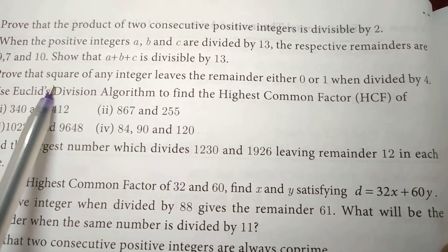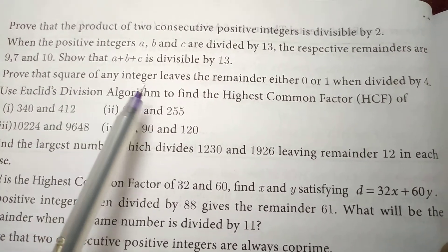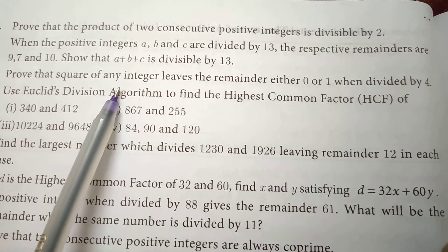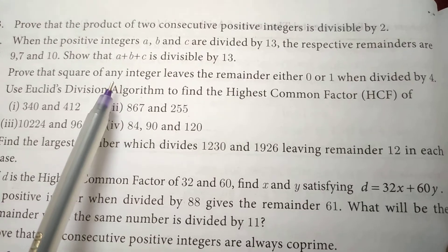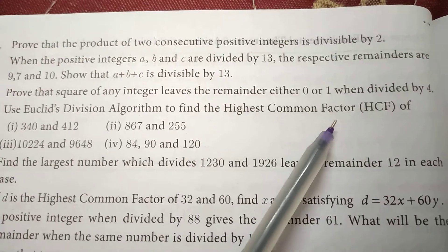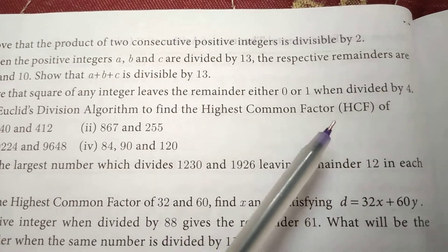So to answer the question: the square of any integer, whatever integer we take, satisfies both conditions. The square of any integer leaves the remainder 0 or 1 when it is divided by 4.